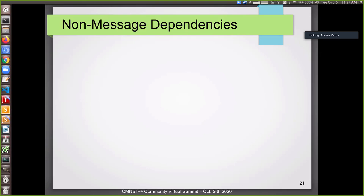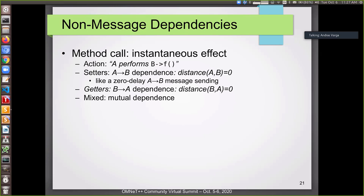And of course, not all the effects are by message passing. There are other dependencies across modules. So for example, the obvious one is like a method call. So if module A calls a function in module B, that's an obvious dependency. We have to take this into account. So for example, if the module A calls a setter function in module B, that's basically like sending a zero delay message with the command set this variable to value x. And this means that the distance of A to B is zero.